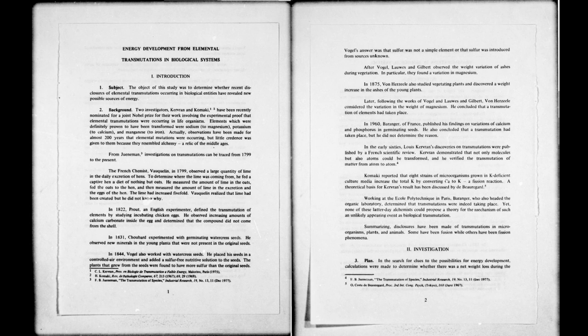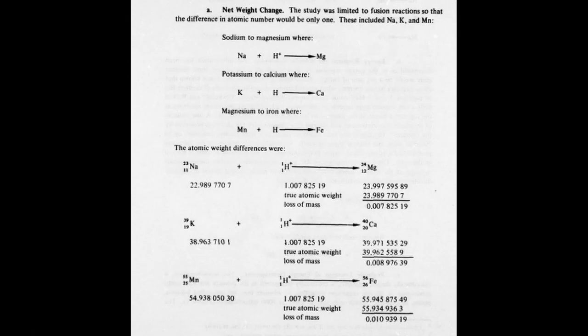The first part looks at what the signs of transmutation might be. This started with an examination of a change in net weight. The study limited itself to fusion reactions where the difference in atomic weight would only be one. These included sodium, potassium and manganese. For sodium, the weight differences were as follows. This would lead to a very small loss of weight for each sodium converted. Potassium would see a larger loss and manganese the greatest.